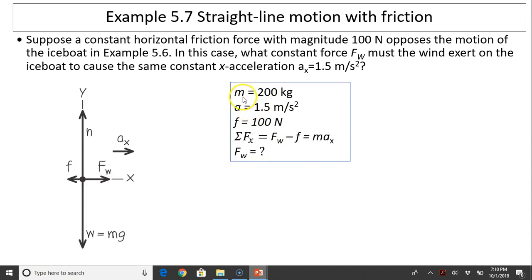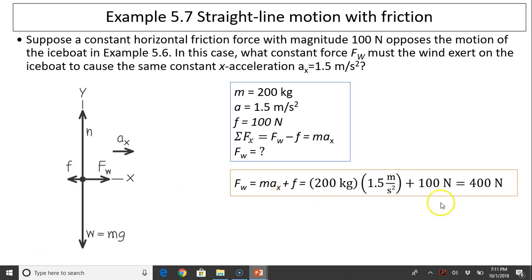Write down everything given. Mass is 200, acceleration we already figured out is 1.5. By the way, this is Ax. Force of friction is 100 newtons. Net force in this case is force of wind minus force of friction, which equals mAx. What is the force of the wind? Plug everything in. Force of wind equals 400 newtons.